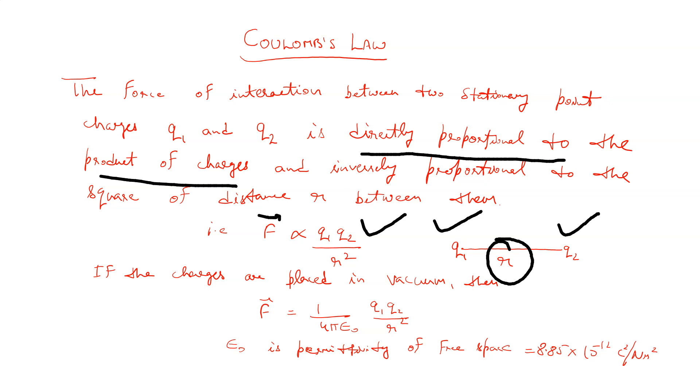If the charges are placed in vacuum, then F equals 1 by 4π epsilon naught q1 q2 by r square, where epsilon naught is the permittivity of free space and that is equivalent to 8.85 multiplied by 10 raised power minus 12 coulomb square per newton meter square.